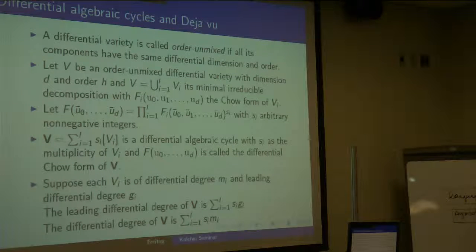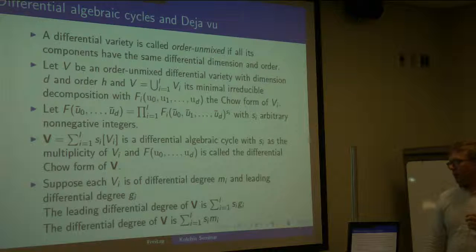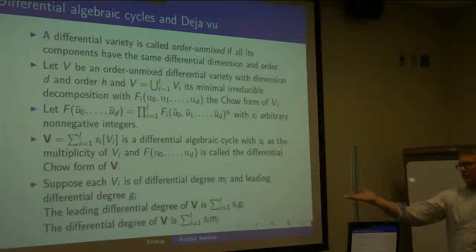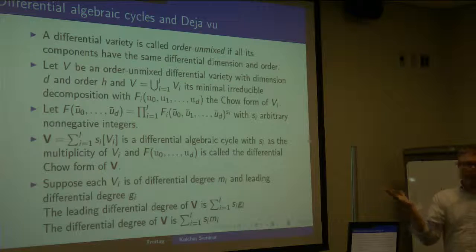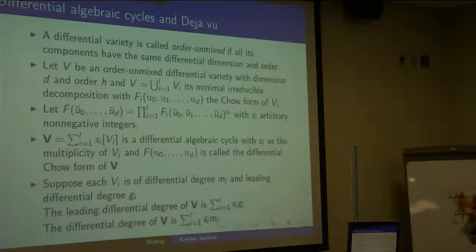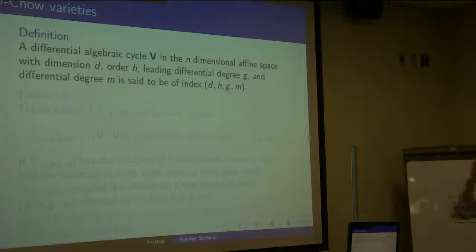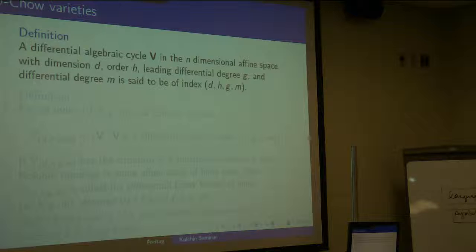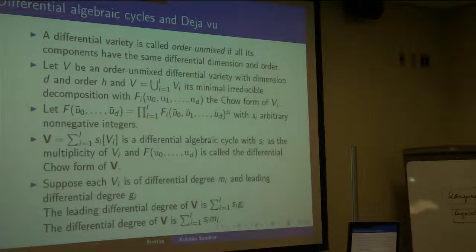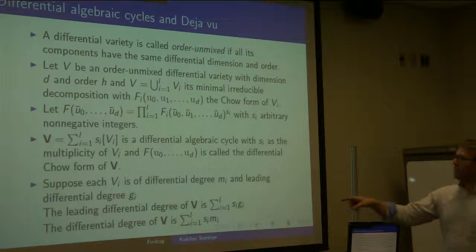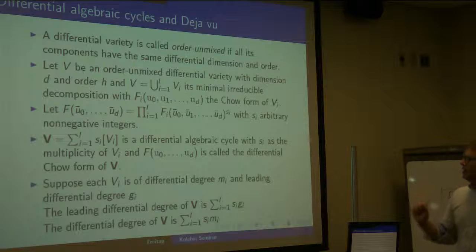Suppose V_i has differential degree m_i and leading differential degree g_i. The definitions for the cycle are given multiplicatively, and it's not hard to see those mesh with looking at certain powers. Here is the definition of a differential algebraic cycle with a fixed index: where s_i are the multiplicities and m_i is the differential degree of V_i.